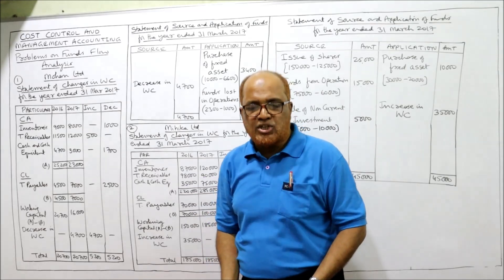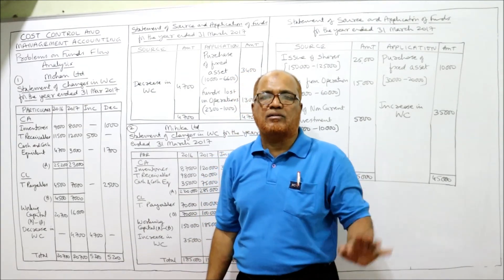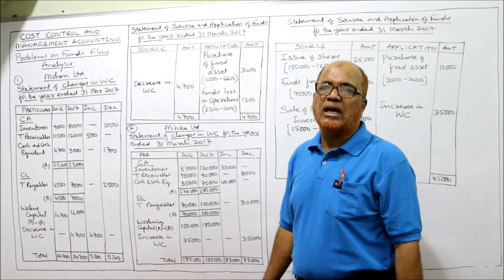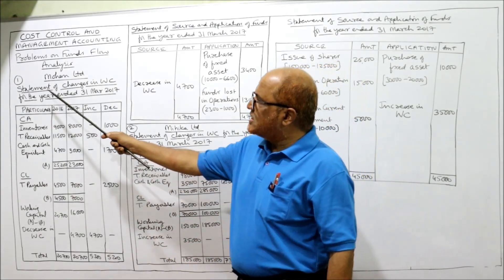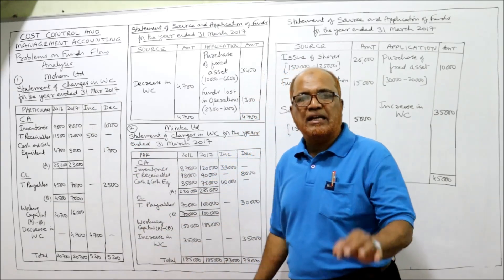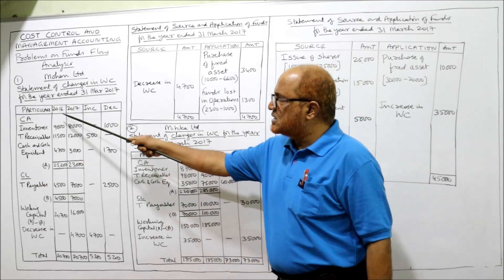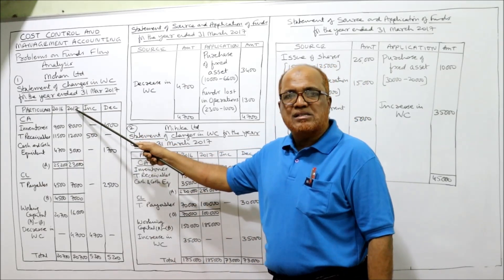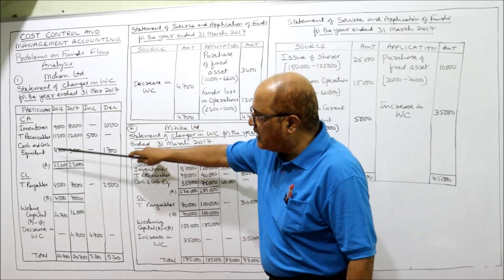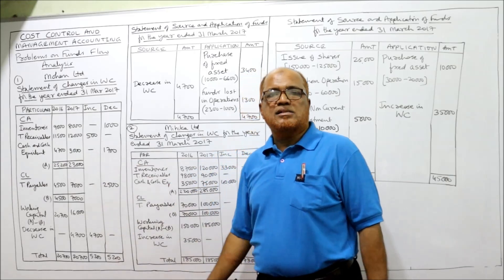You are required to prepare a statement of changes in working capital and statement of source and application of funds. First, we are going to make the statement of changes in working capital for the year 31st March 2017. We need four columns: particulars, last year 2016, current year 2017, increase, and decrease.